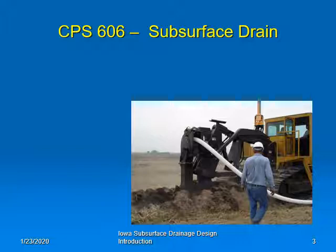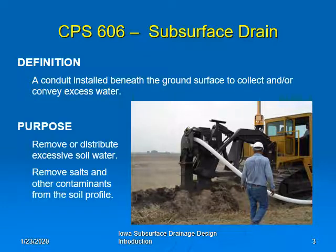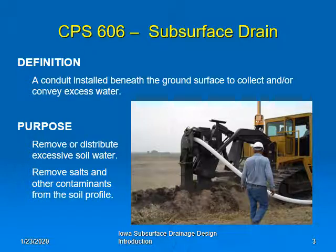The definition of subsurface drainage can be found in NRCS Conservation Practice Standard 606, Subsurface Drain, where subsurface drain is defined as a conduit installed beneath the ground surface to collect and/or convey excess water. This excess water fills the pore spaces of saturated soil and is also called gravitational water. The purpose of a subsurface drain is to remove or distribute excessive soil water or to remove salts and other contaminants from the soil profile.